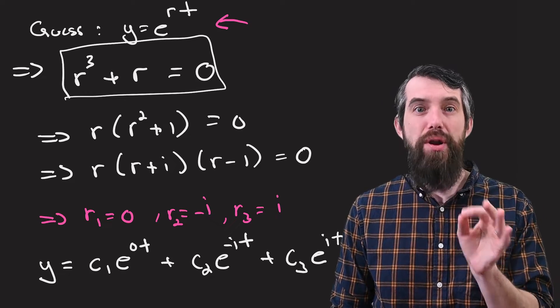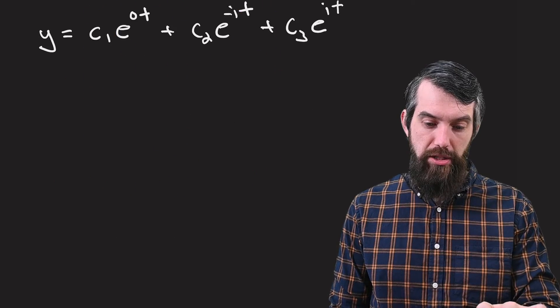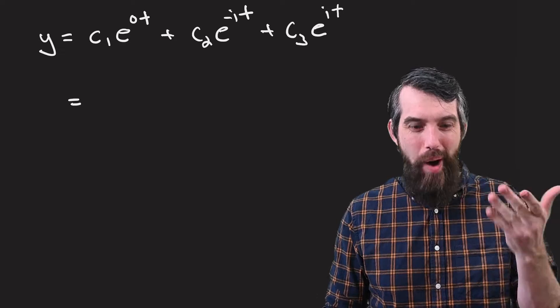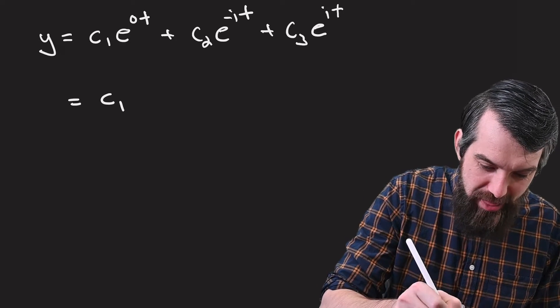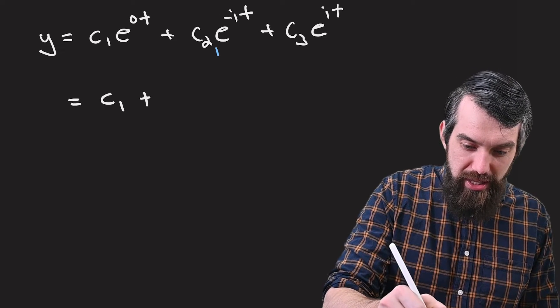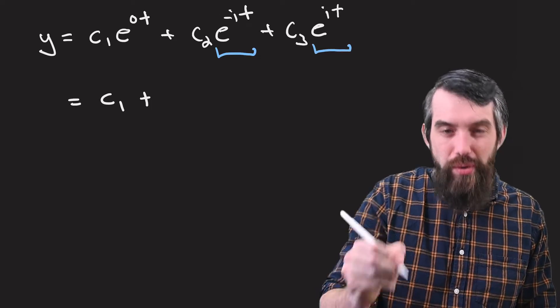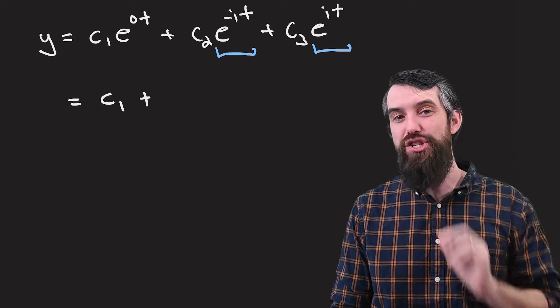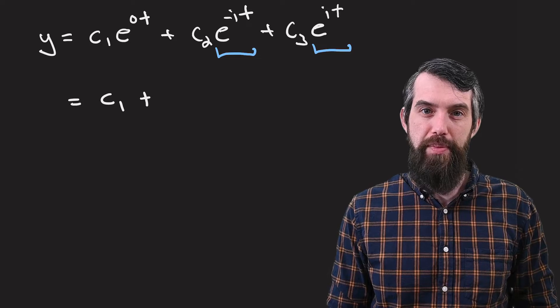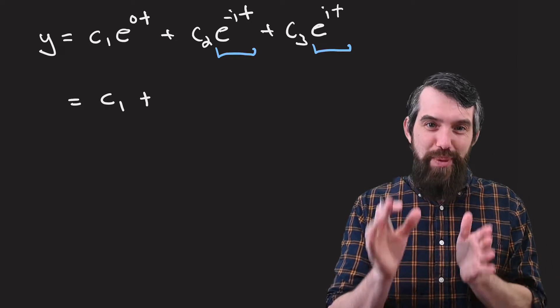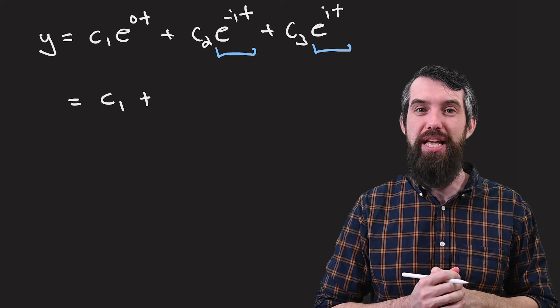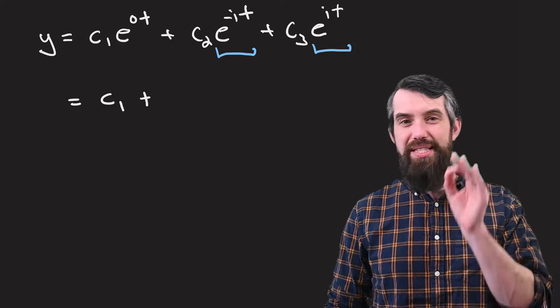This answer is okay, but I want to do two different manipulations to it. The first manipulation is that e to the 0t is just 1, so I'll just put the c1 out the front. But the second manipulation I want to do is I notice that I have these two different exponentials with imaginary numbers in them, e to the minus it and e to the plus it. My goal is to take these exponentials with imaginary components, and I would like to have two real linearly independent solutions I can use instead.